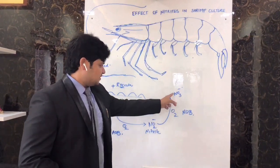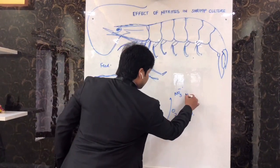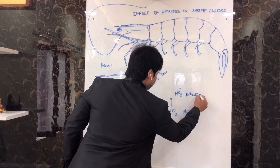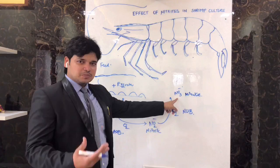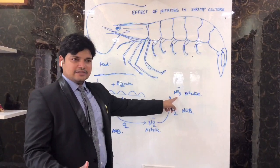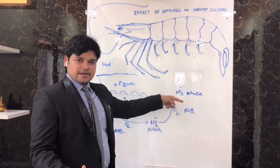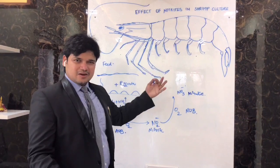To convert nitrite into nitrate. This nitrate is not so harmful as nitrite. Nitrate is purposefully needed for shrimp or fish ponds.